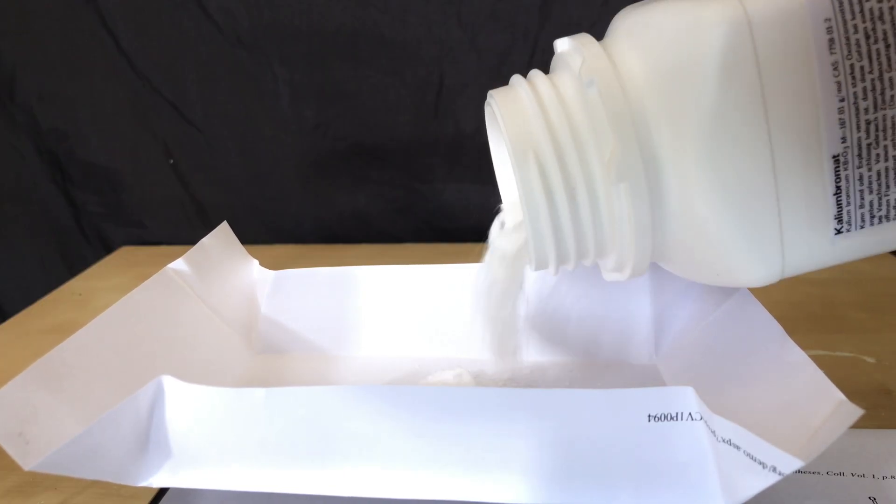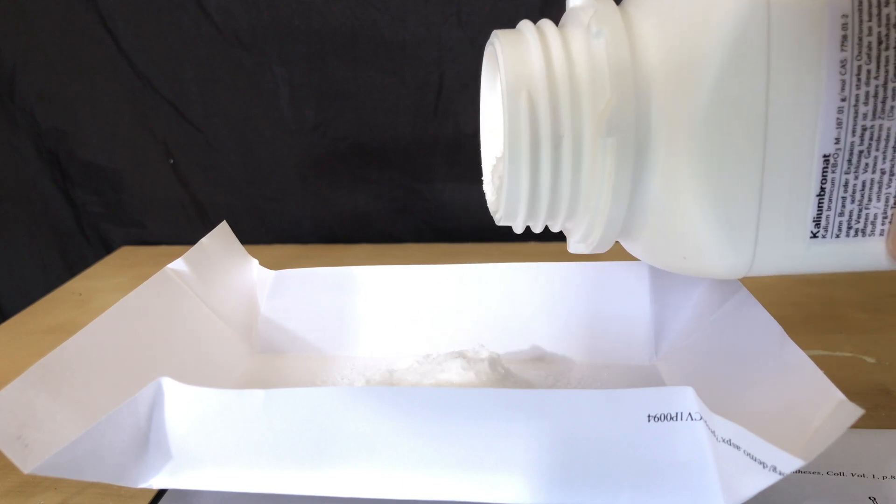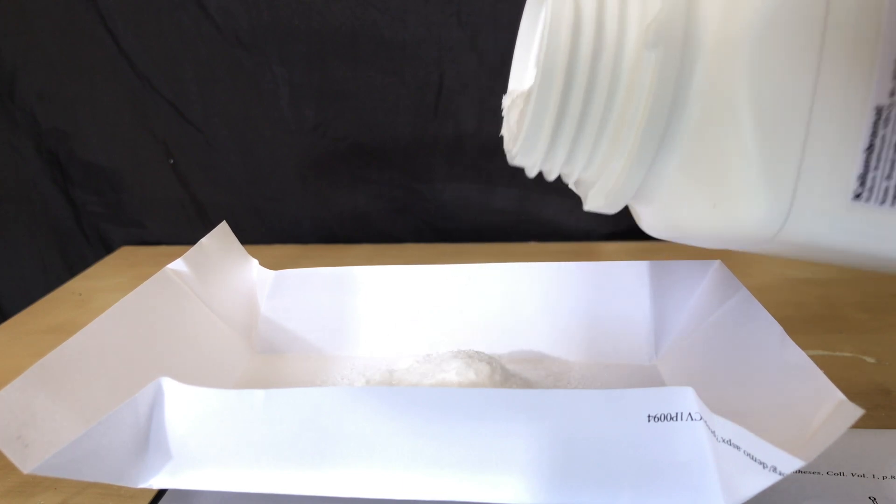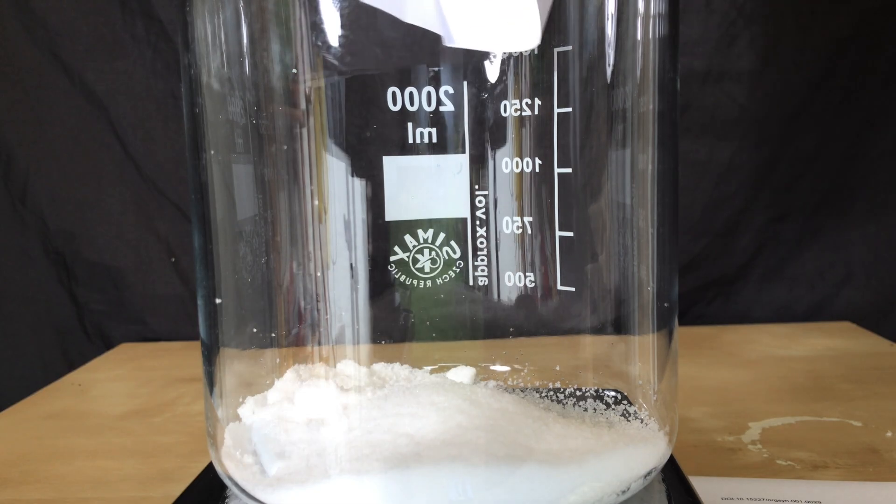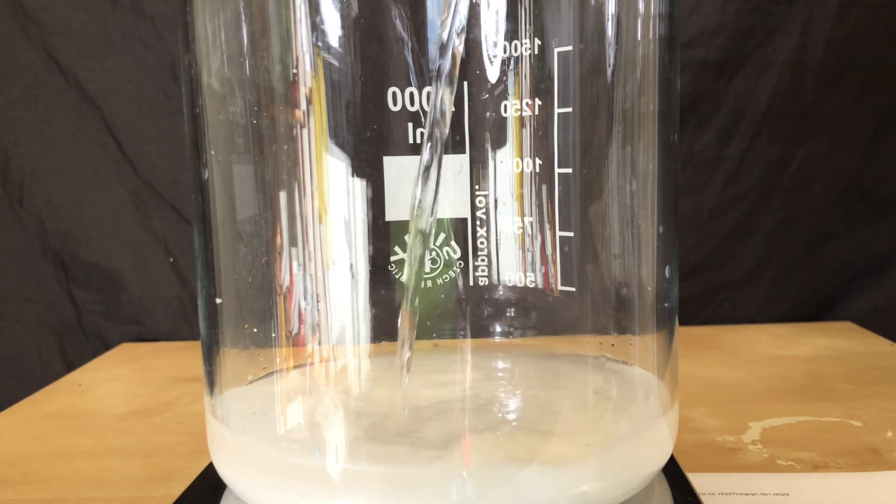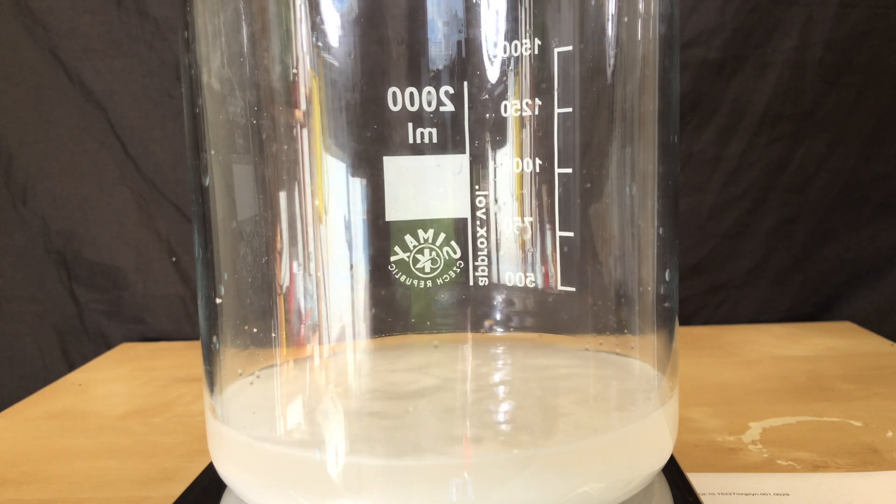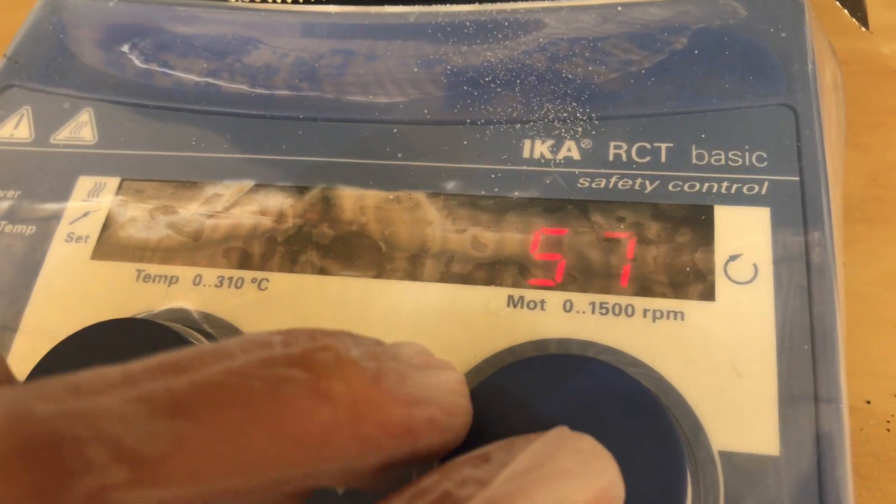The second reagent I weighed out was potassium bromate. I even made this potassium bromate myself in a previous video. Keep in mind that potassium bromate is carcinogenic and you should wear gloves while handling it. We then added approximately 193.2 grams of distilled water to this mixture. The beaker was quickly put on the hot plate and heating and stirring were turned on.